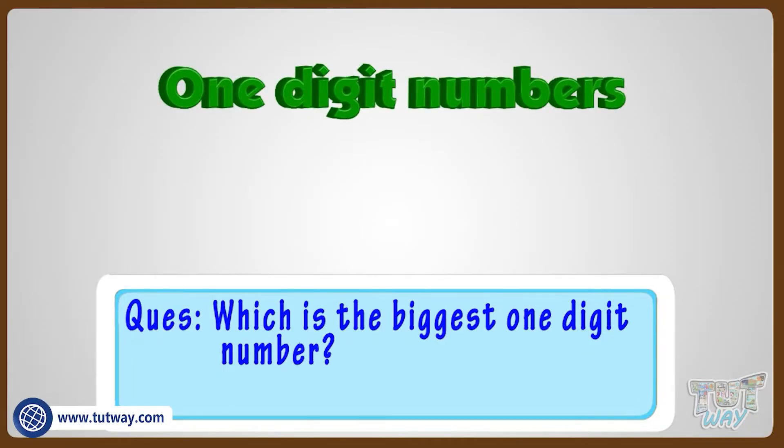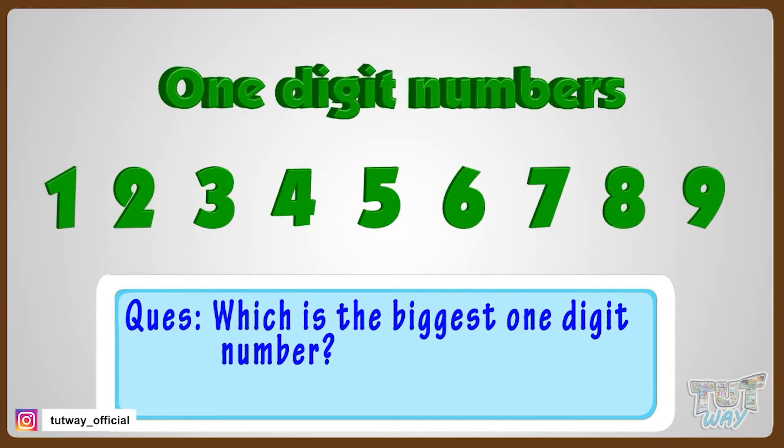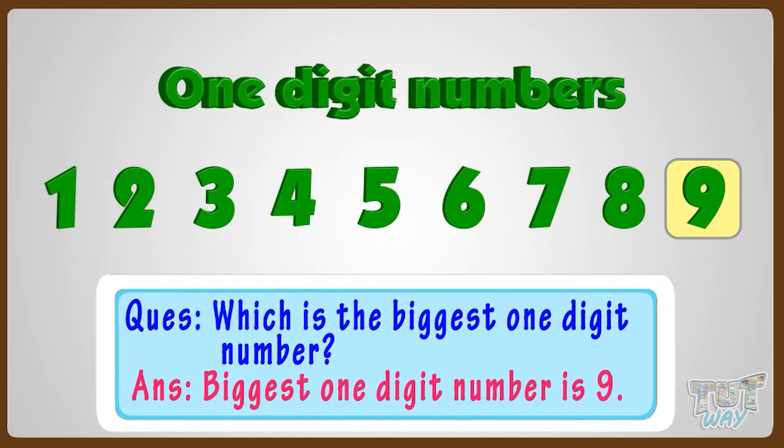One-digit numbers are from 1 to 9. And the biggest number here is 9. So the biggest one-digit number is 9.